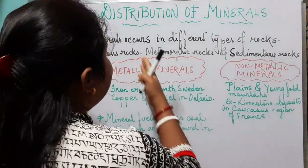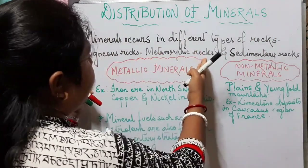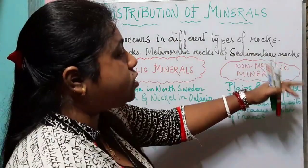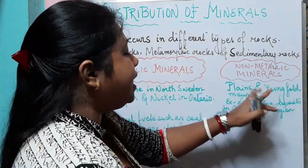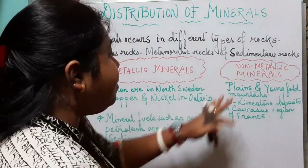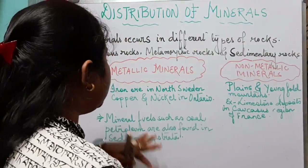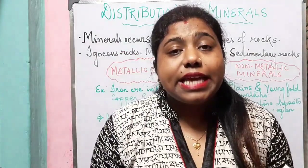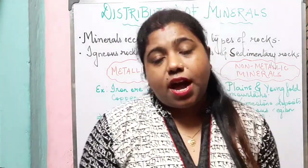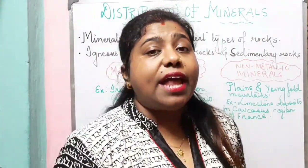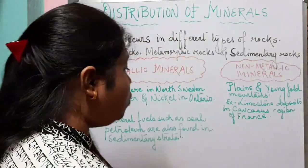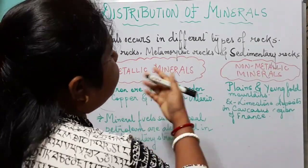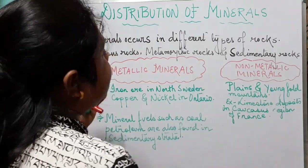So in igneous and metamorphic rocks, metallic minerals occur, while in sedimentary rocks, non-metallic minerals occur. We will also see that coal and petroleum occur in the sedimentary strata, and in the oceanic bed we can find coal and petroleum. These are the different minerals that occur in the different types of rocks.